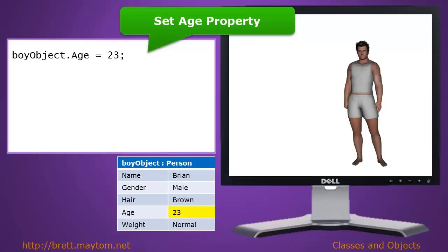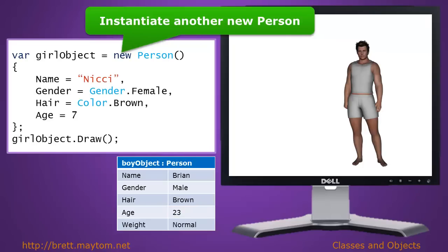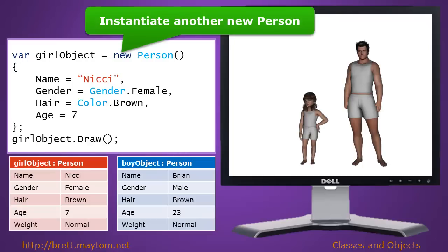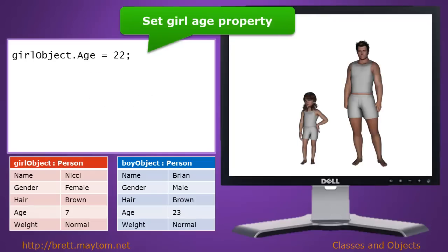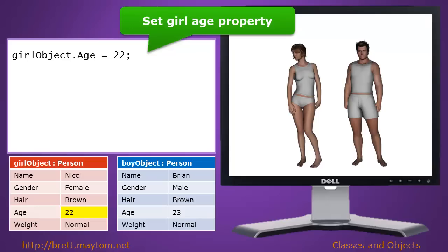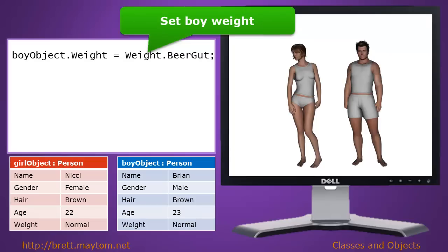Being object-oriented programming, we can create multiple instances of the same object. Let's instantiate another person — this time a girl object. We create a variable for girl object and set it to a new person, setting her name to Nikki, gender female, hair color brown, age 7, and execute the draw method. In memory, we now have both a boy object and a girl object with their properties set. We then set girl object dot age to 22 and the girl updates. Our program now has two independent objects. Should we set the boy's weight to give him a beer tummy, it only affects the boy object and not the girl object.